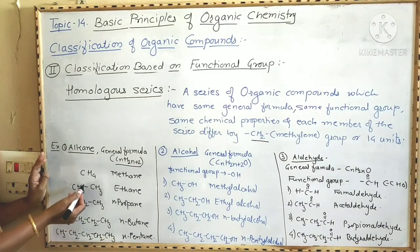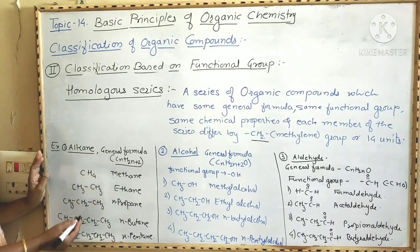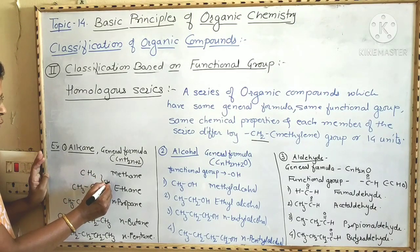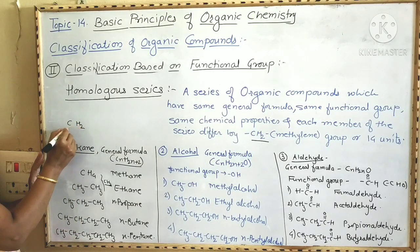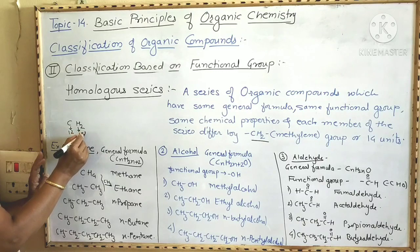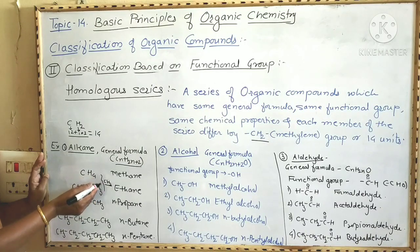Now observe: the molecular formula of methane is CH4, while the molecular formula of ethane is C2H6. The difference between these two is a CH2 group — that is the methylene group. Each successive member differs by a CH2 group or 14 mass units. The value 14 comes from the atomic mass of carbon (12) plus two hydrogen atoms (1 each), giving 12 + 2 = 14. Therefore each successive member differs by 14 mass units.